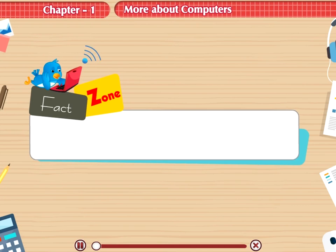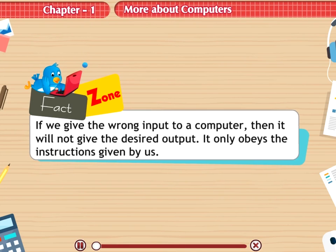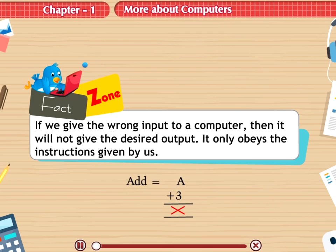Fact Zone: If we give the wrong input to a computer, then it will not give the desired output. It only obeys the instructions given by us.